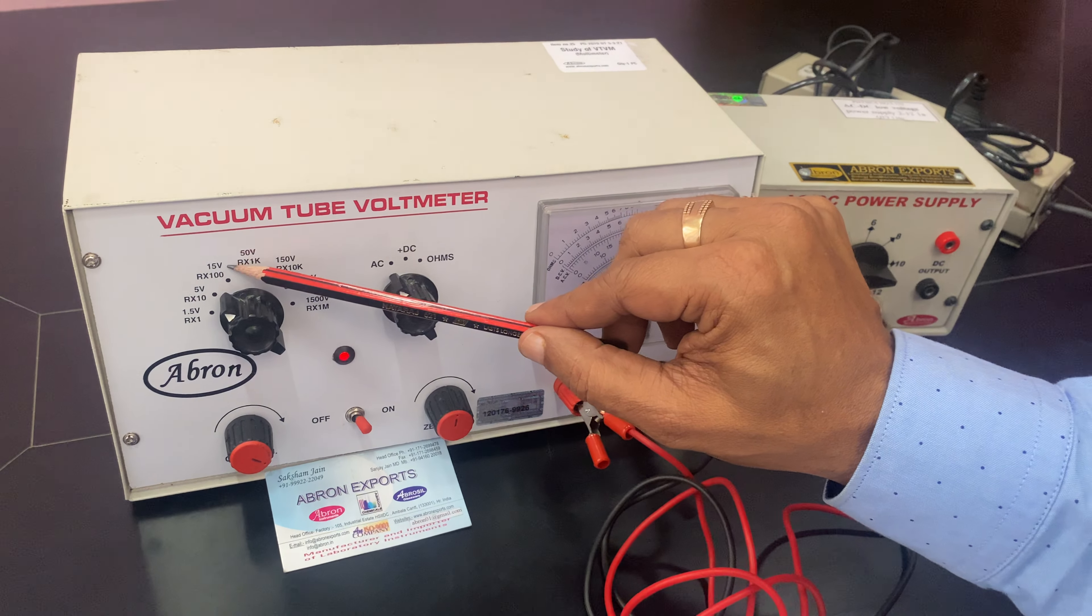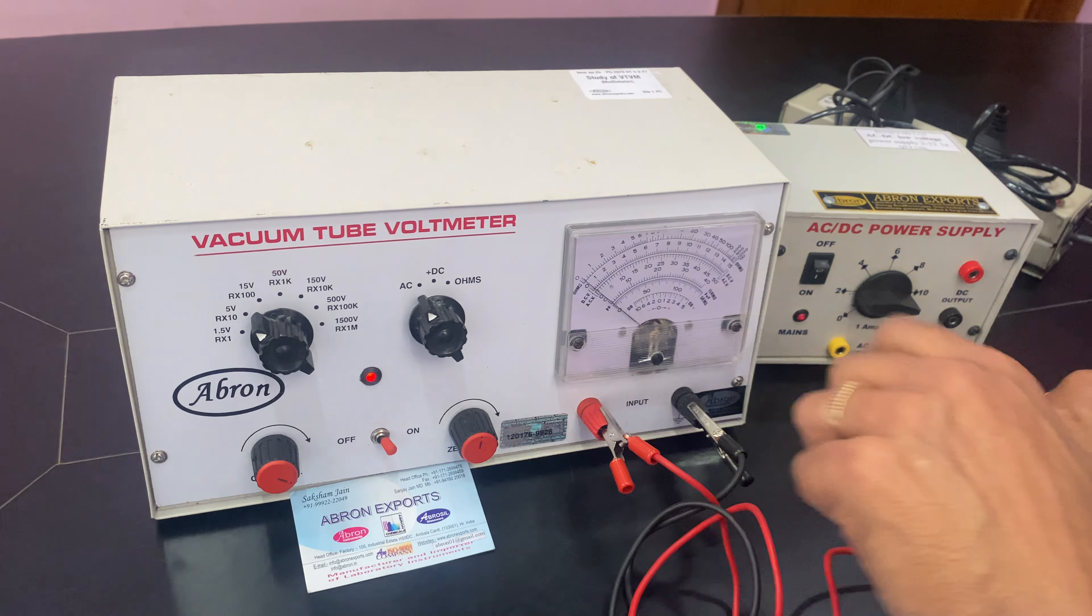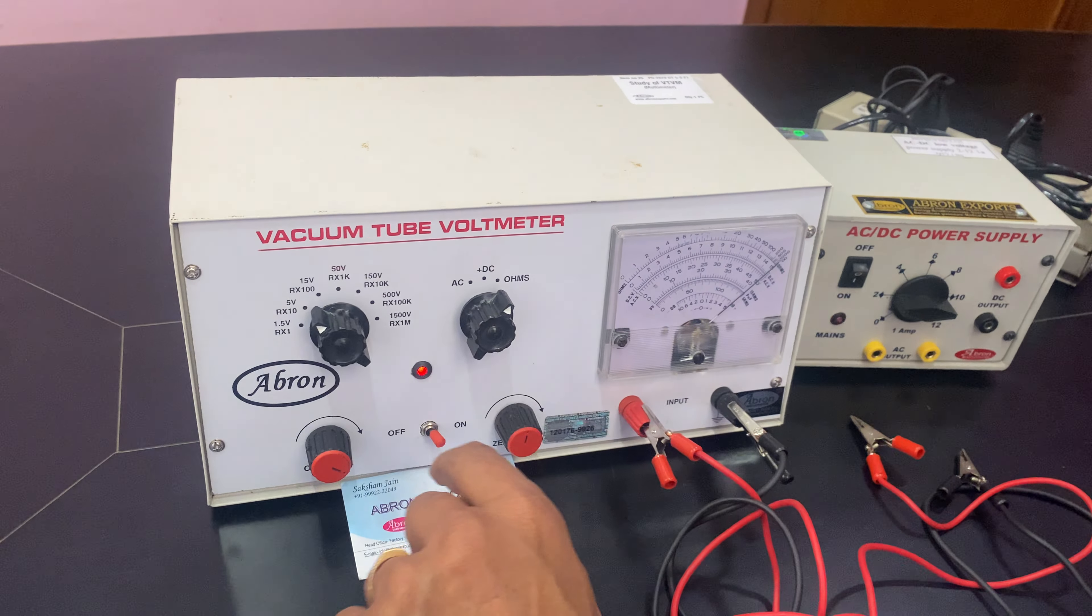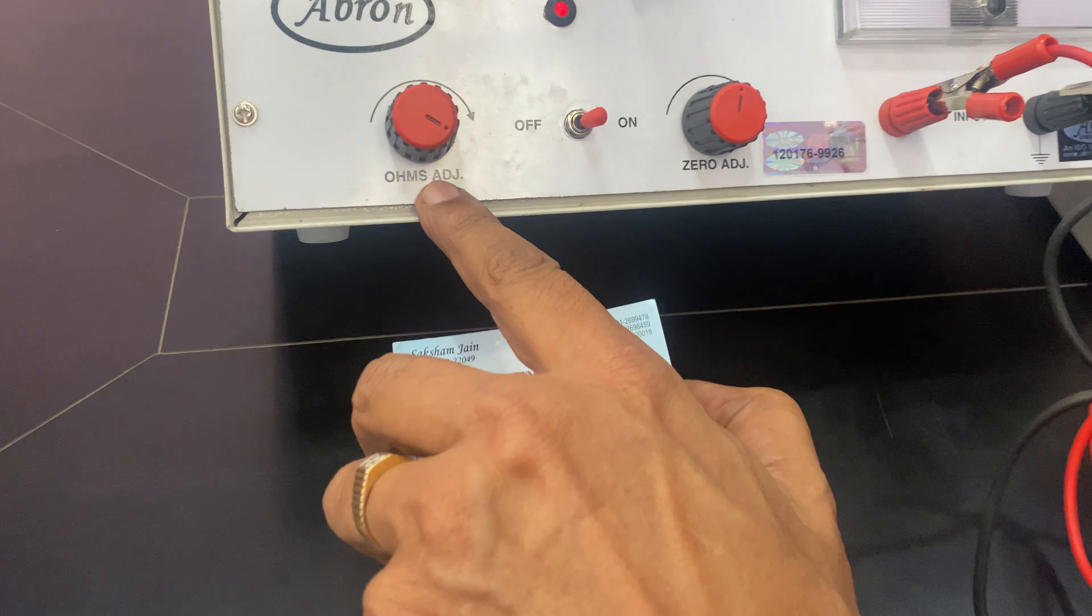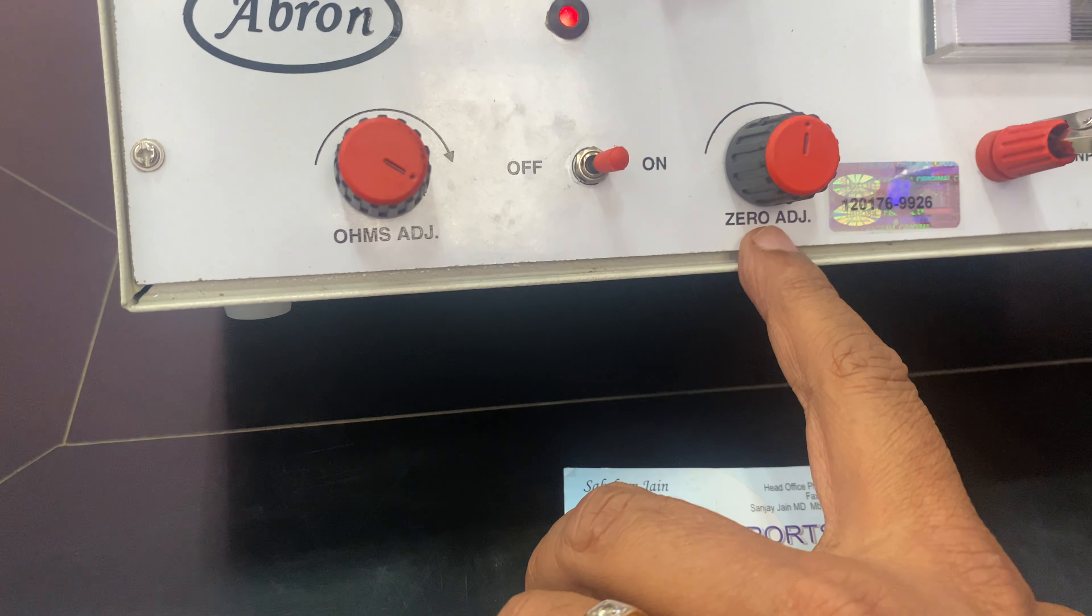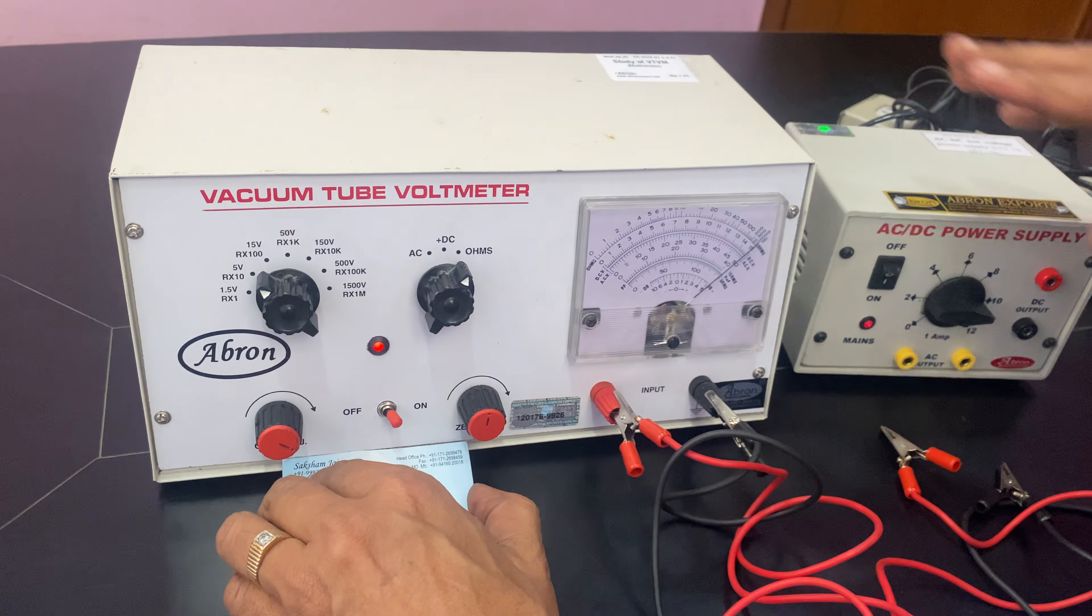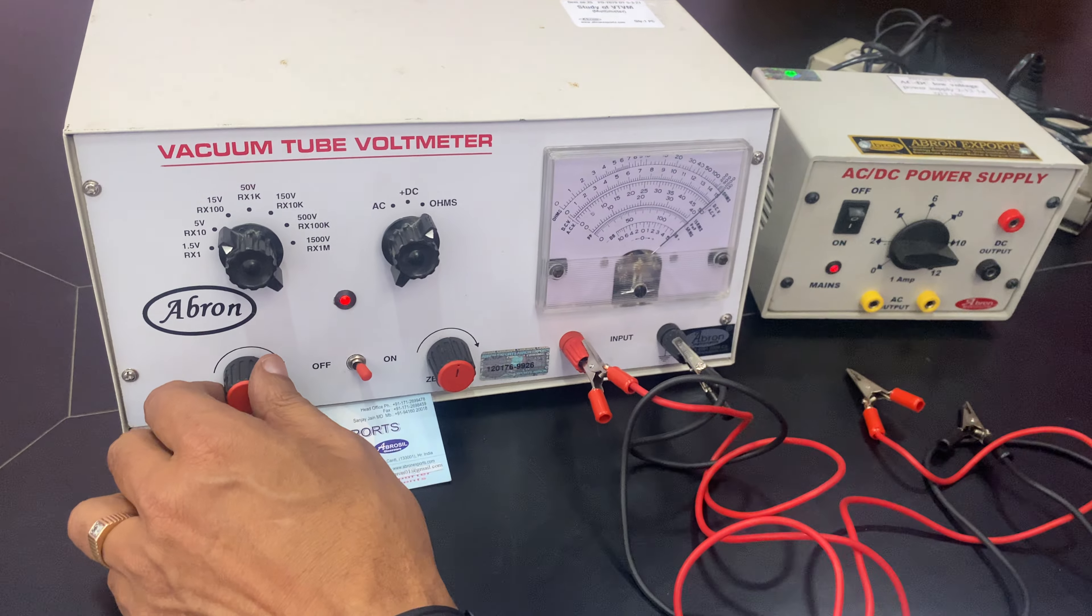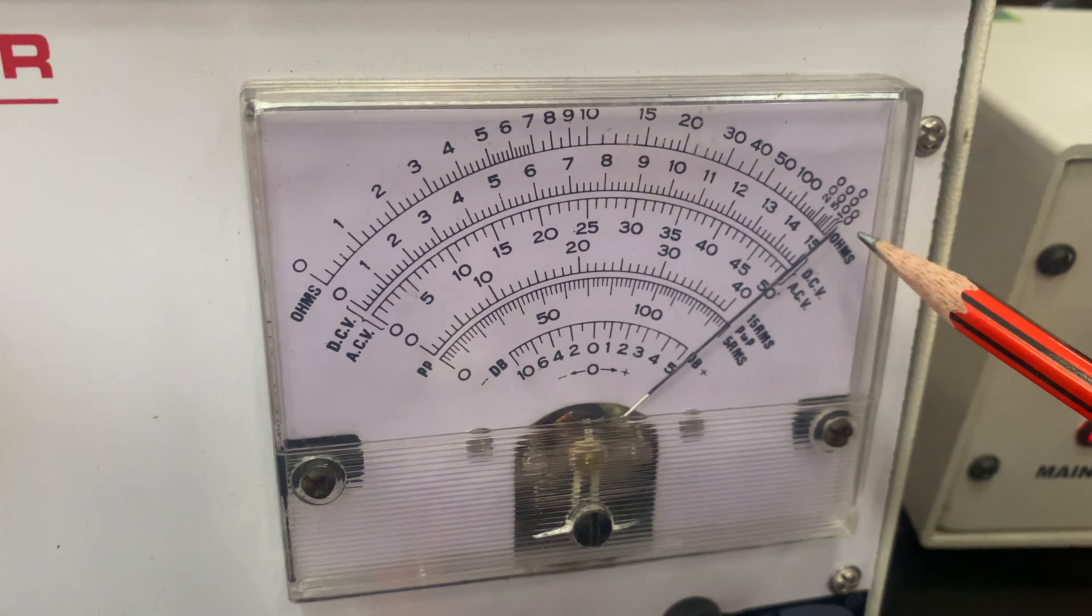Similarly, I can check the ohms from this meter. I put it on ohms. There's an adjustment, an ohms adjustable knob, and this is the zero adjustable for voltage. This ohms adjustable I can adjust. This is the ohm scale. I can adjust it to 100.